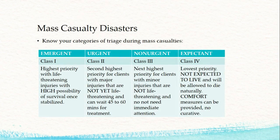Know your different categories when it comes to triaging with mass casualties — classes range from emergent to expectant. Class 1 has the highest priority: life-threatening injuries with a high possibility of survival once stabilized. Class 2 is urgent — second highest priority — with major injuries not yet life-threatening that can wait up to 60 minutes for treatment. Class 3 is non-urgent: minor injuries that do not need immediate attention. Class 4 is expectant — the lowest priority — these patients are not expected to live and will be allowed to die naturally; comfort measures can be provided but no curative treatment.